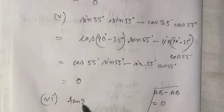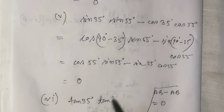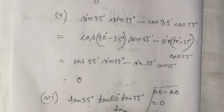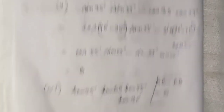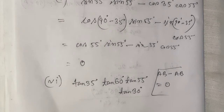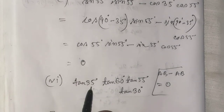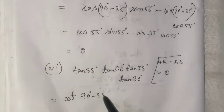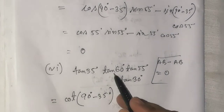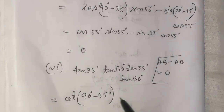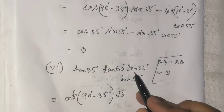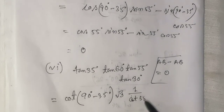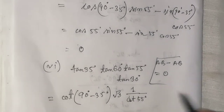Next: tan35° × tan60° × tan55° × tan30°. We note that tan35° can be written using 90° - 55°, so tan(90° - 55°) equals cot55°. Also tan60° equals √3.